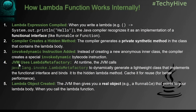Then the JVM uses LambdaMetafactory. At runtime, the JVM calls LambdaMetafactory to dynamically generate a lightweight class that implements the functional interface and binds the method to the hidden lambda method created in step 2. The JVM creates a lightweight class, implements the lambda expression's interface, binds the method to that class, and caches it — because a lambda expression cannot be changed once compiled or seen by the JVM.